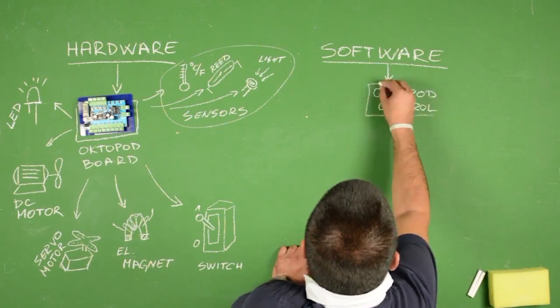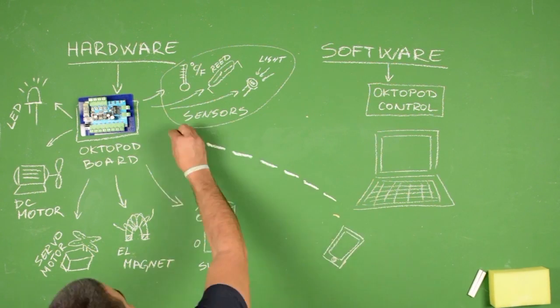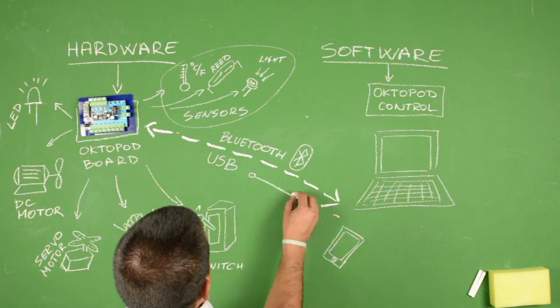On the other hand, using the software Octopod Control, you can connect the board to your PC or Android device via USB or Bluetooth connection.